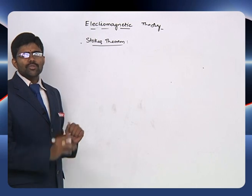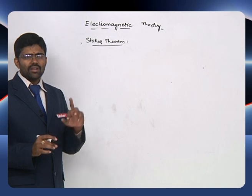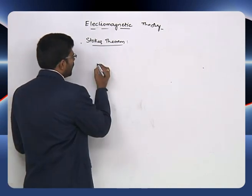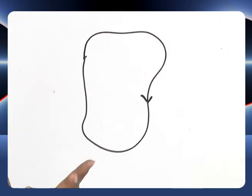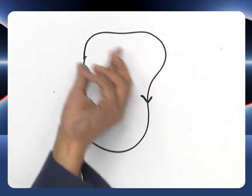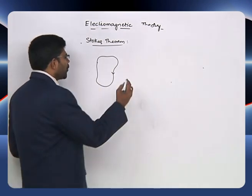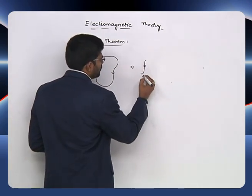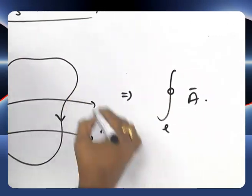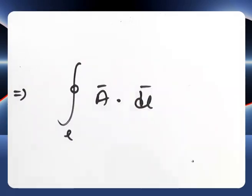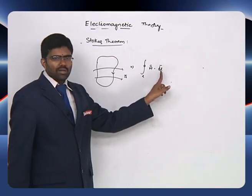In the same way, we have Stokes' theorem, which is useful for connecting the line integral with the surface integral. Let us consider a closed line. We are going to calculate how the field is distributed along this closed line. The closed line integral — let A-bar be the field flowing along the line — gives A-bar dot dl-bar.